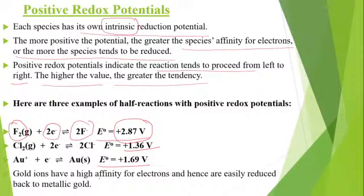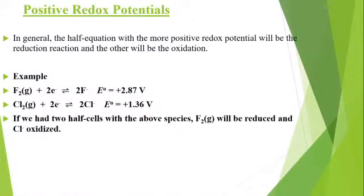Gold ions have an affinity for electrons and hence are easily reduced back to metallic gold. These are the values showing gain of electron. In general, the half-equation with more positive reduction potential will be the reduction reaction and the other will be the oxidation.